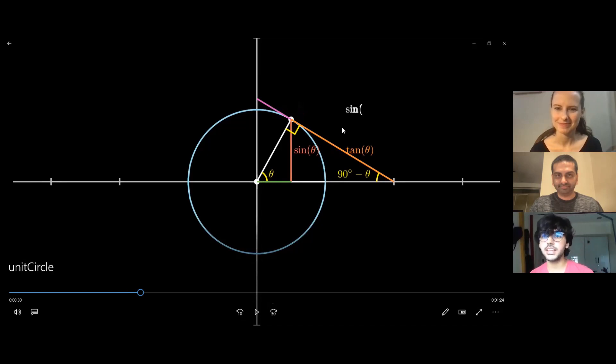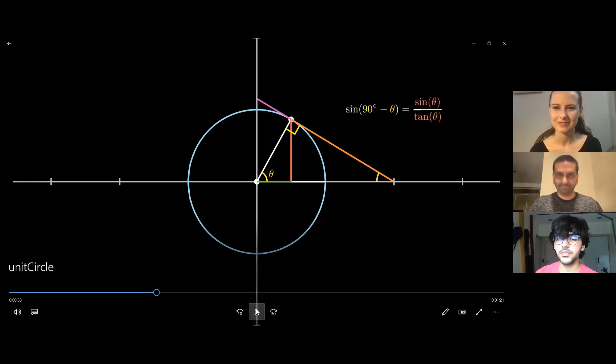is that we can use this to prove that tan theta is equal to sine theta upon cosine theta. So let's start by taking the sine of this angle here, 90 minus theta. By definition, it should be opposite over hypotenuse, which in this case is sine theta upon tan theta.